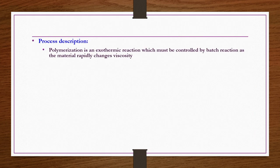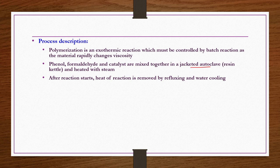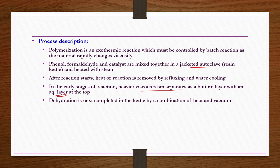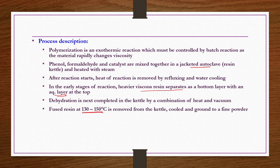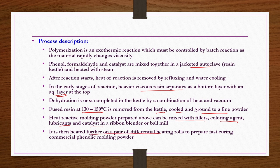Process description: Polymerization is an exothermic reaction controlled by batch reaction as the material rapidly changes viscosity. Phenol, formaldehyde, and catalyst are mixed together in a jacketed autoclave or resin kettle and heated with steam. After the reaction starts, heat of reaction is removed by refluxing and water cooling. In the early stages, heavier viscous resin separates as a bottom layer with an aqueous layer at the top, which is dried off by steam and vacuum. The fused resin at 130 to 150°C is removed from the kettle, cooled, and ground to fine powder. Heat-reactive molding powder is mixed with fillers, coloring agents, lubricants, and catalyst in a ribbon blender or ball mill, then heated further on differential heating rolls to prepare fast-curing commercial phenolic molding powder.